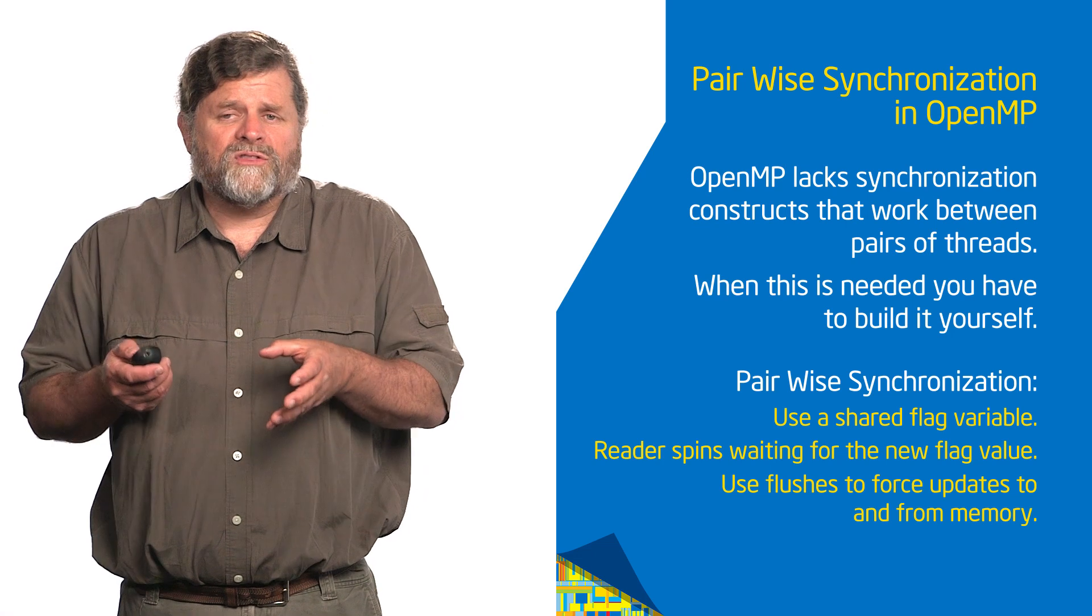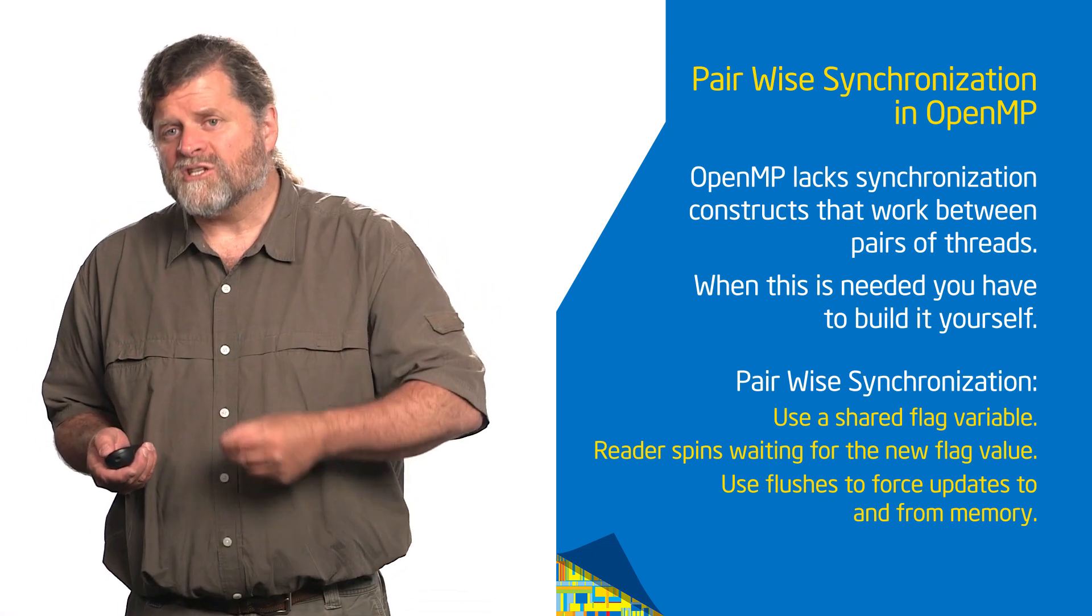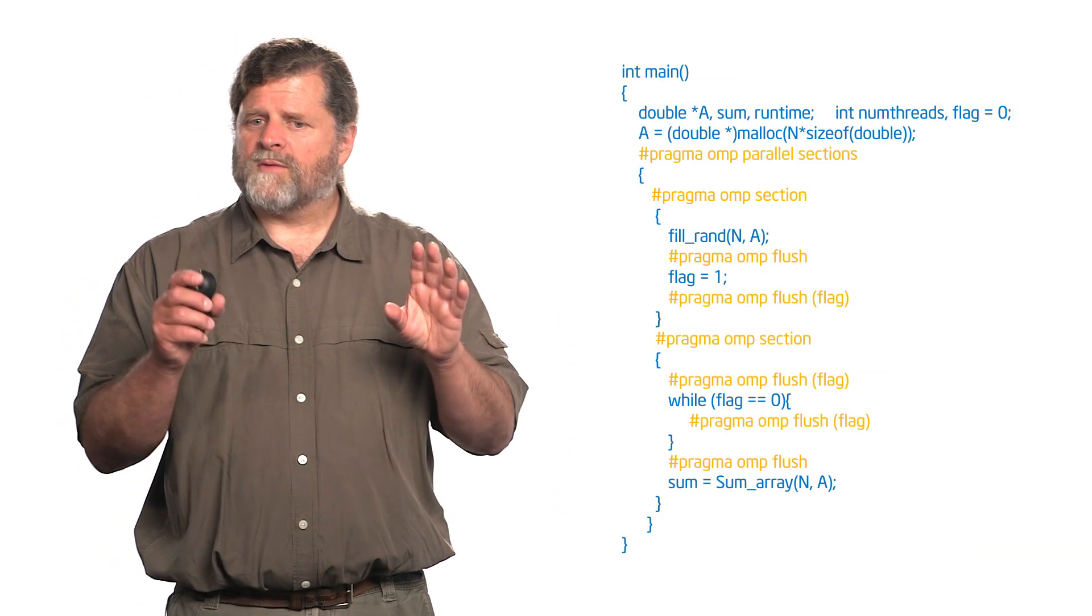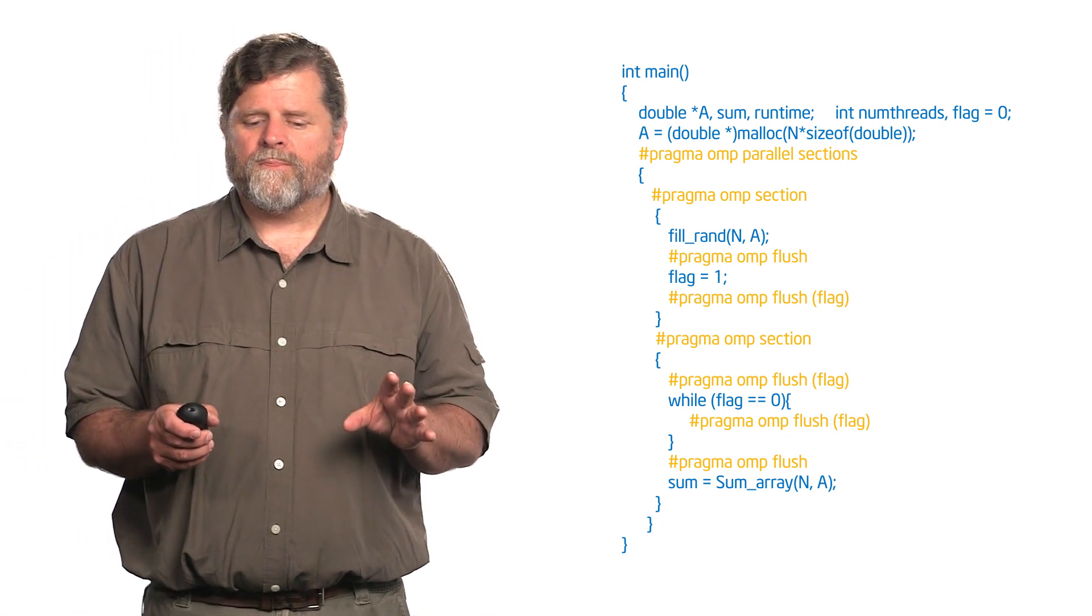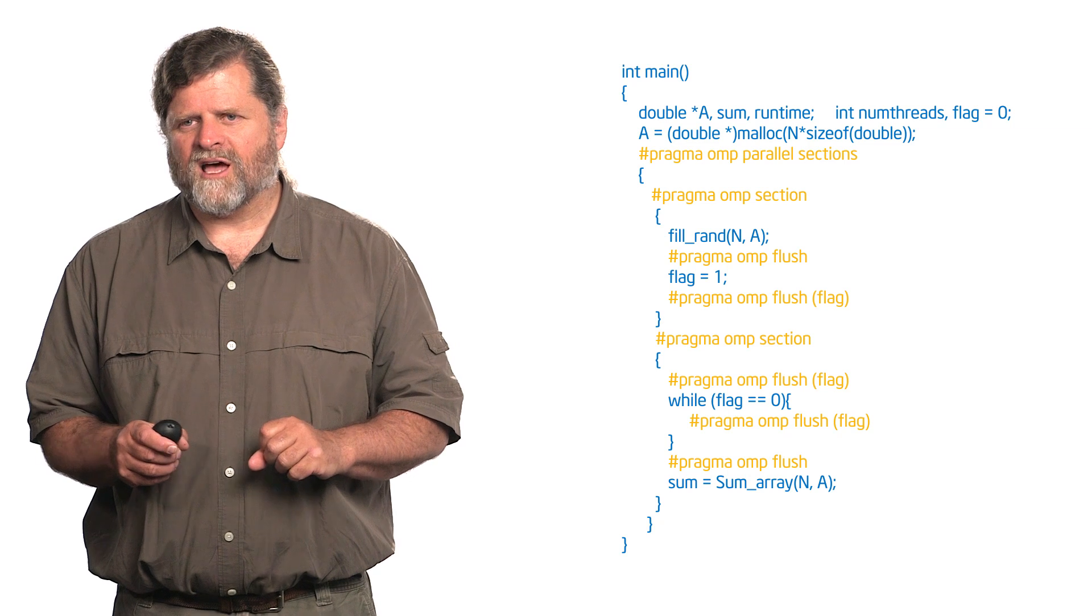So what I'm going to have to do is I'm going to have to put the right flushes in so that the coordination between the producer and the consumer works. Here is a version of this code, and now I'm going to tell you something here. This code works 99.999% of the time on almost every machine out there today. But there's technically a bug in it, and before we're done, we'll fix that bug.